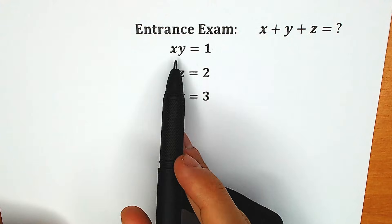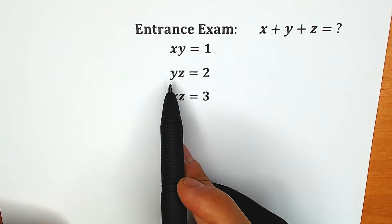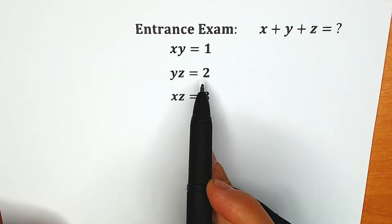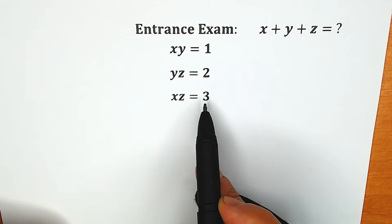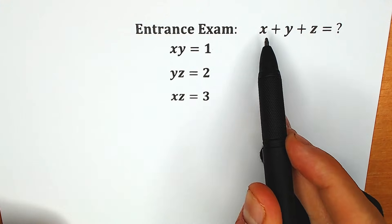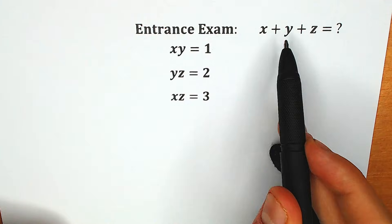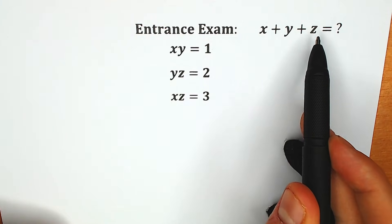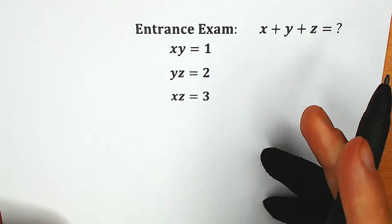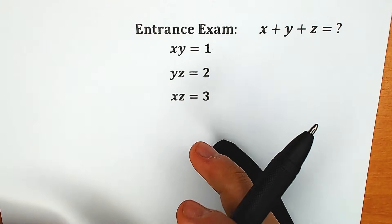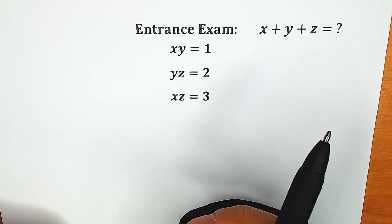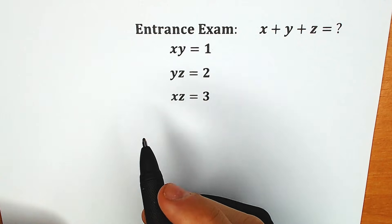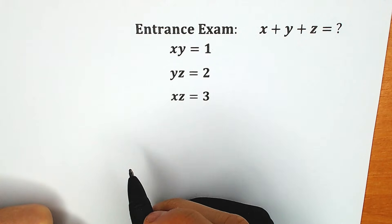We know that xy equals 1, yz equals 2, xz equals 3, and we need to find the sum x plus y plus z. Right now you can easily pause the video and write a solution in the comments below, and then we will check our answers — it will be really interesting.